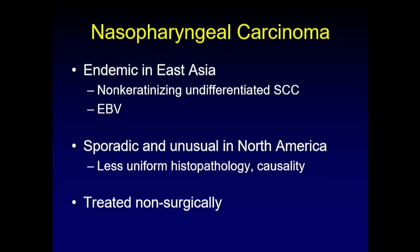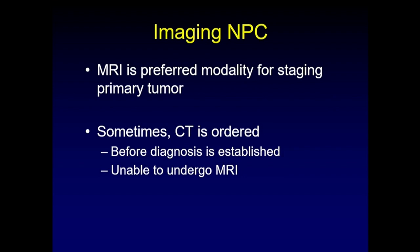Nasopharyngeal carcinoma is a disease endemic to East Asia, where the non-keratinizing, undifferentiated form of squamous cell carcinoma is always encountered. It is associated with Epstein-Barr virus infection. Treatment is non-surgical — chemoradiation — unless debulking is needed for extremely large tumors. MRI is the preferred modality for staging primary nasopharyngeal carcinoma. CT is used when the diagnosis is not yet established or when patients are unable to undergo MRI.